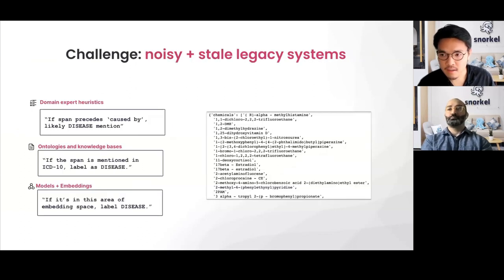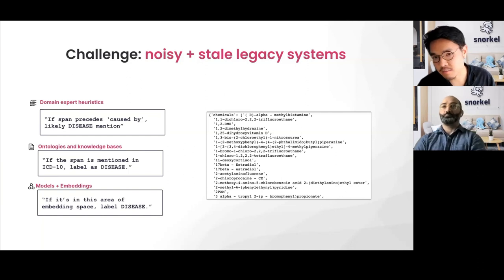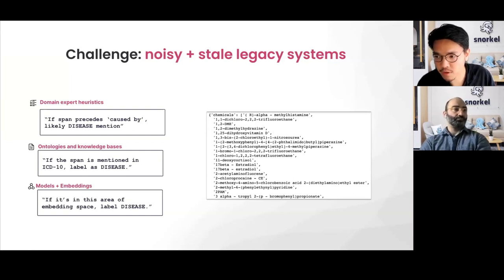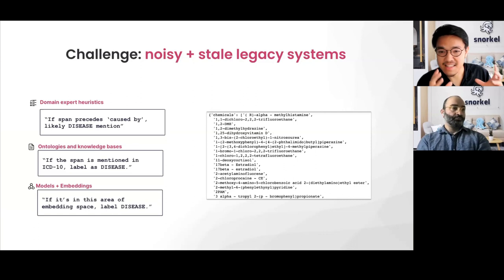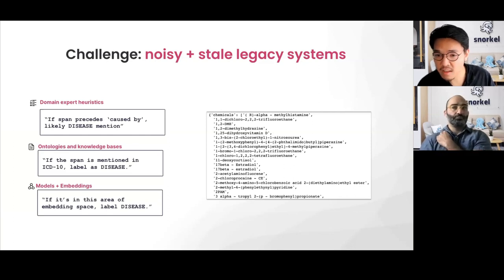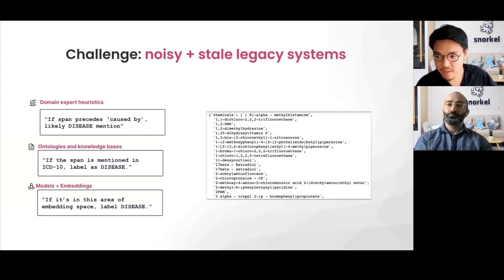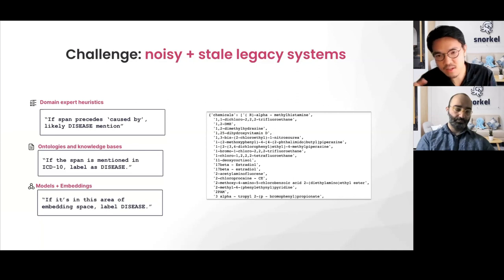The next challenge is around noisy and stale legacy systems. We often encounter teams that have a number of existing systems in place for information extraction, and the key question we hear is whether there's a way to update these systems to re-leverage or repurpose them for newer tasks, newer schemas. The teams we work with end up with a bit of a sunk cost dilemma — these are static rules, ontologies, and models that quickly become stale and come with varying degrees of quality. Organizations really struggle to make use of what's actually a rich goldmine of information and knowledge in existing systems they've built over the years.